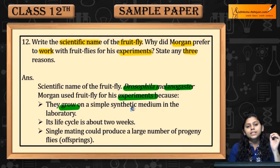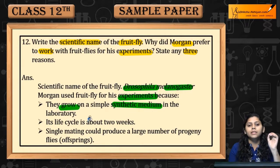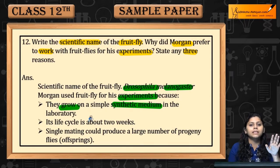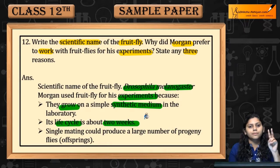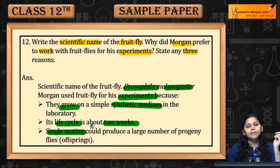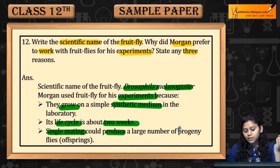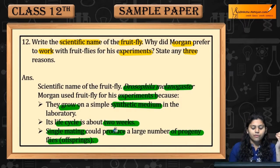Morgan preferred fruit flies because they grow on a simple synthetic medium in the laboratory. Their life cycle is about two weeks. Additionally, a single mating produces a large number of progenies or offspring.